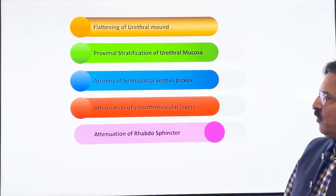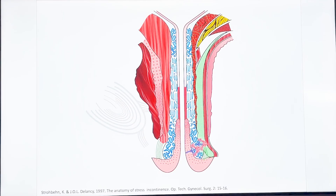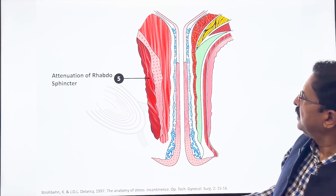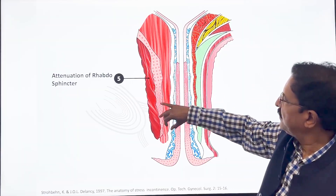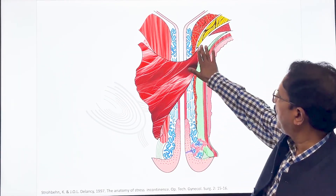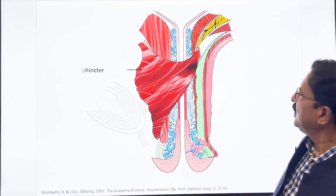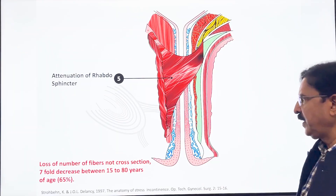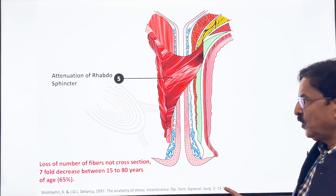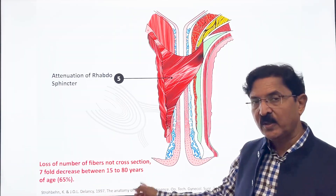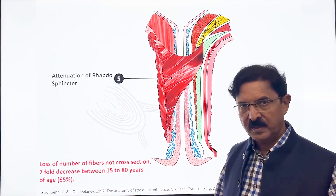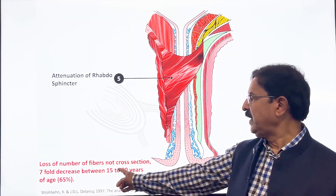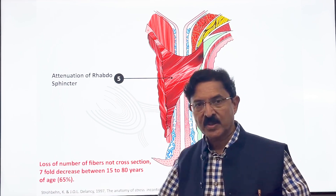The fifth change is attenuation of the rhabdosphincter. You can see how thick it is in the normal state; after menopause it becomes thin and attenuated. The anterolateral fan-like extension, so bulky in a normal person, becomes thin after menopause — so the rhabdosphincter becomes weak. Importantly, this reflects a loss in the number of muscle fibers, not a reduction in the cross-section of individual fibers. There may be as much as a 7-fold decrease between the ages of 15 and 80 years.